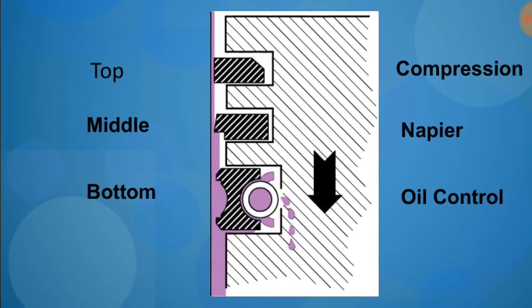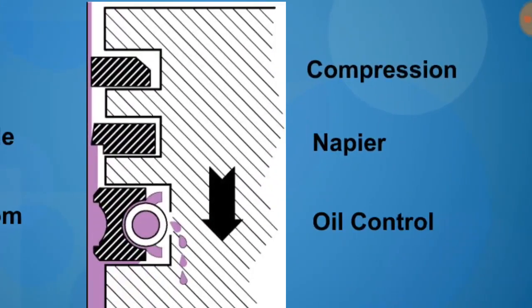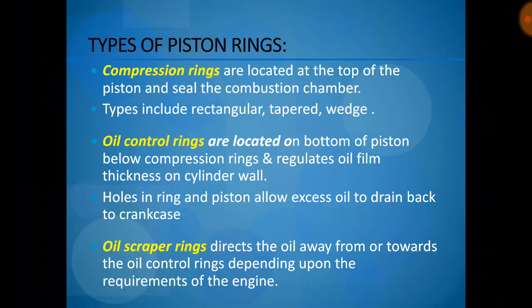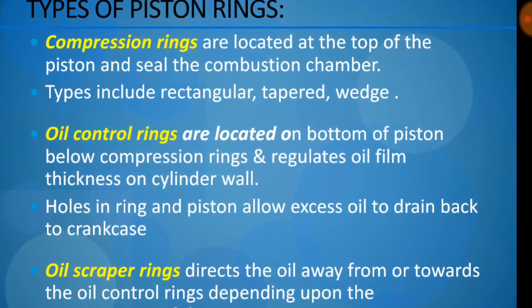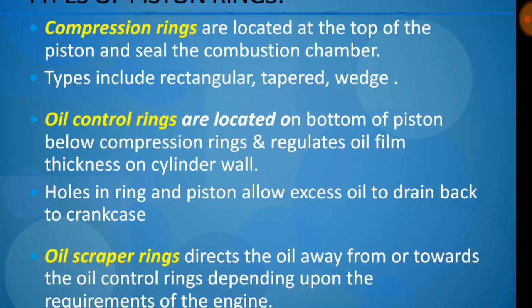The piston rings have different functions: compression, trapping air, and oil control. Compression rings are located at the top of the piston and seal the combustion chamber; types include rectangular, taper, and wedge. Oil control rings are located at the bottom of the piston, below the compression rings, and regulate the oil film thickness on the cylinder wall.